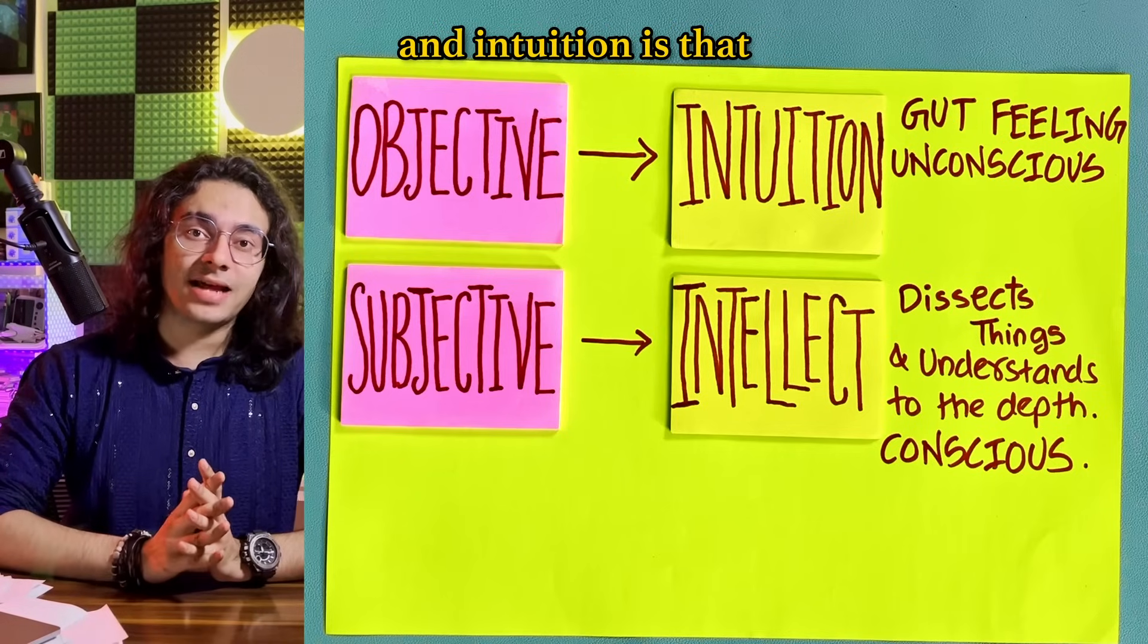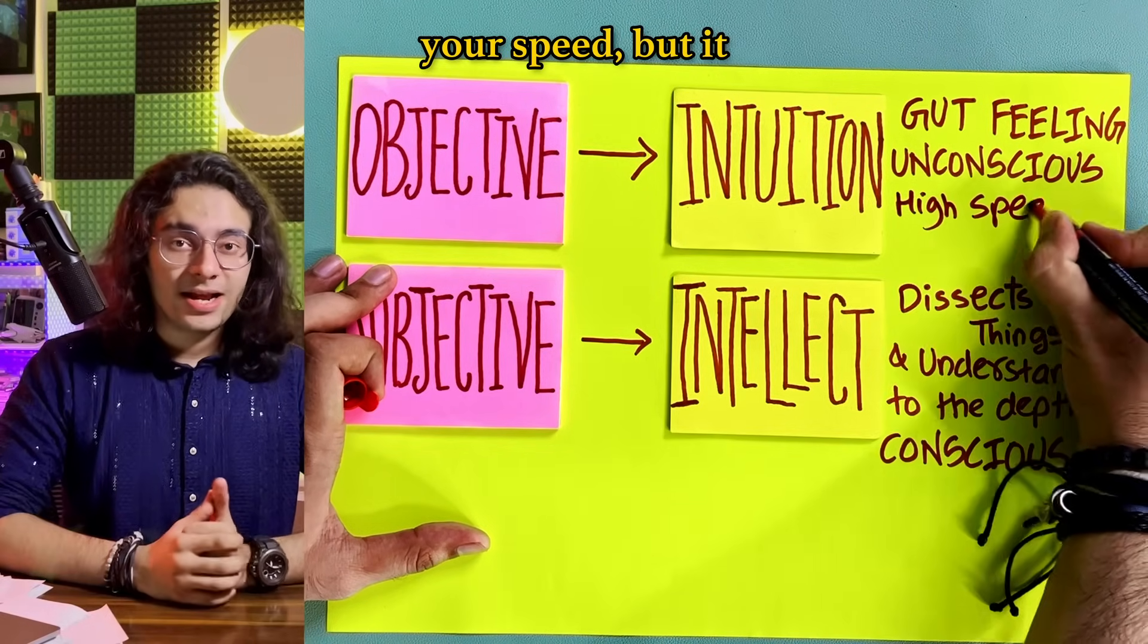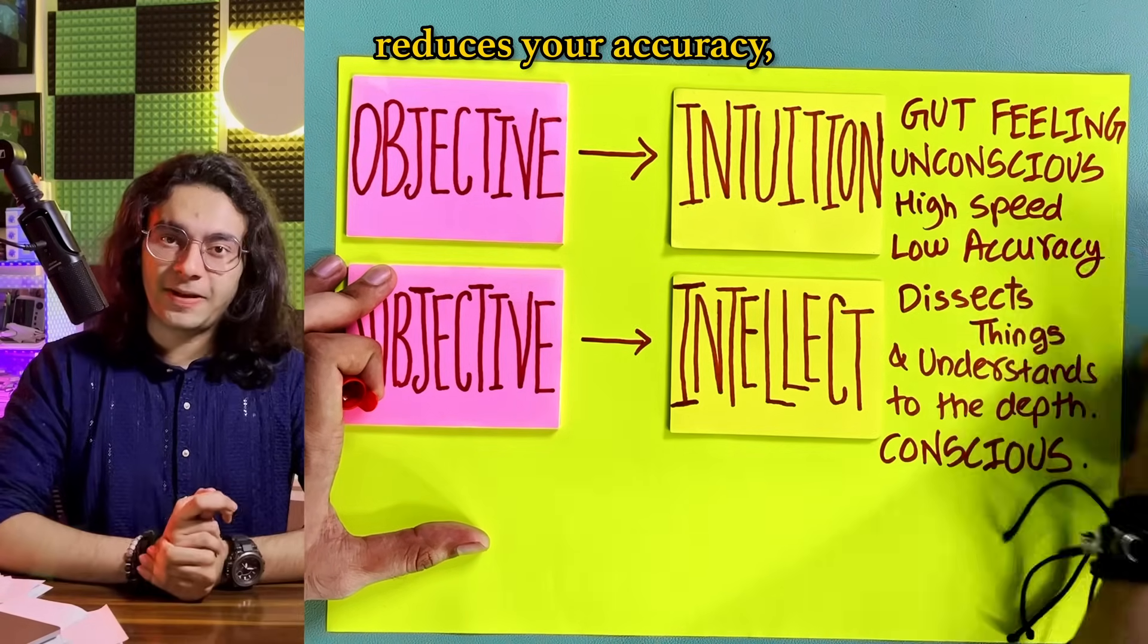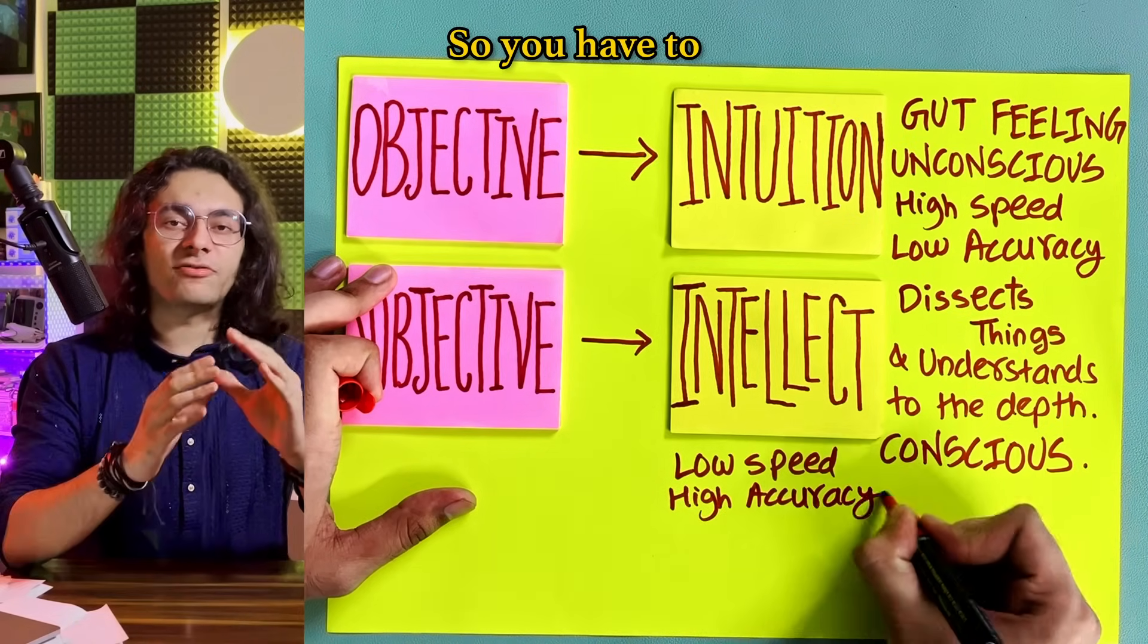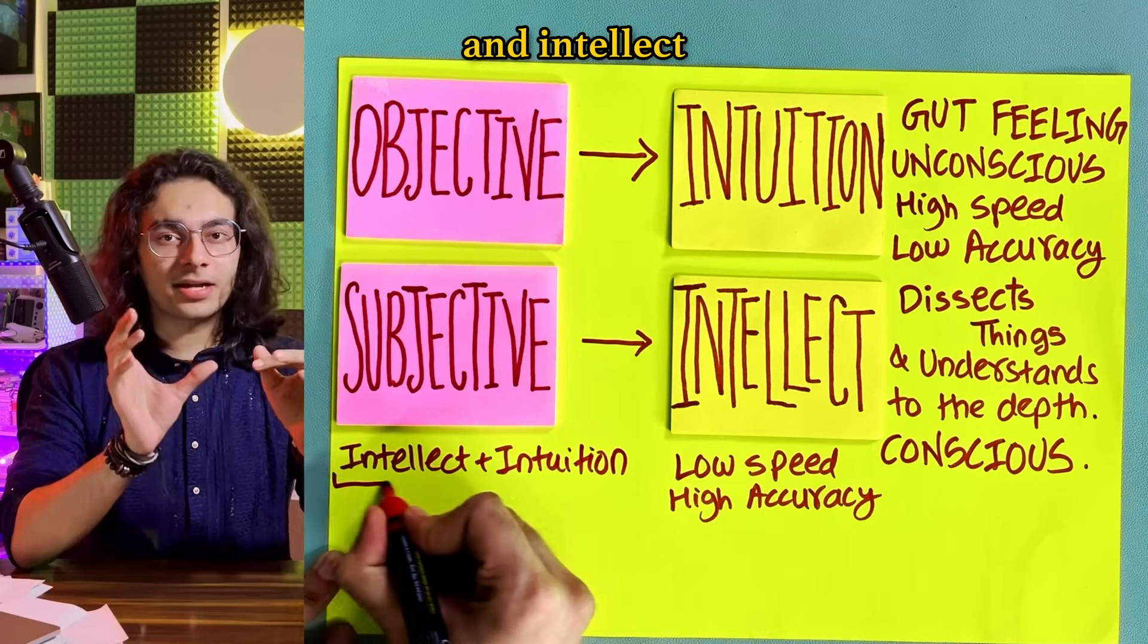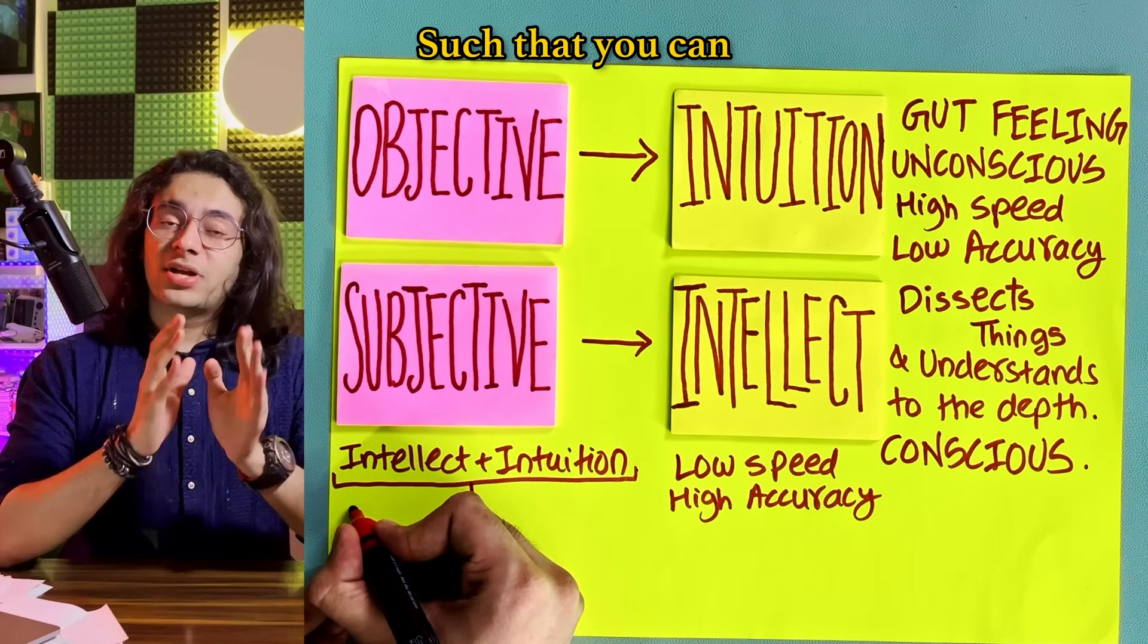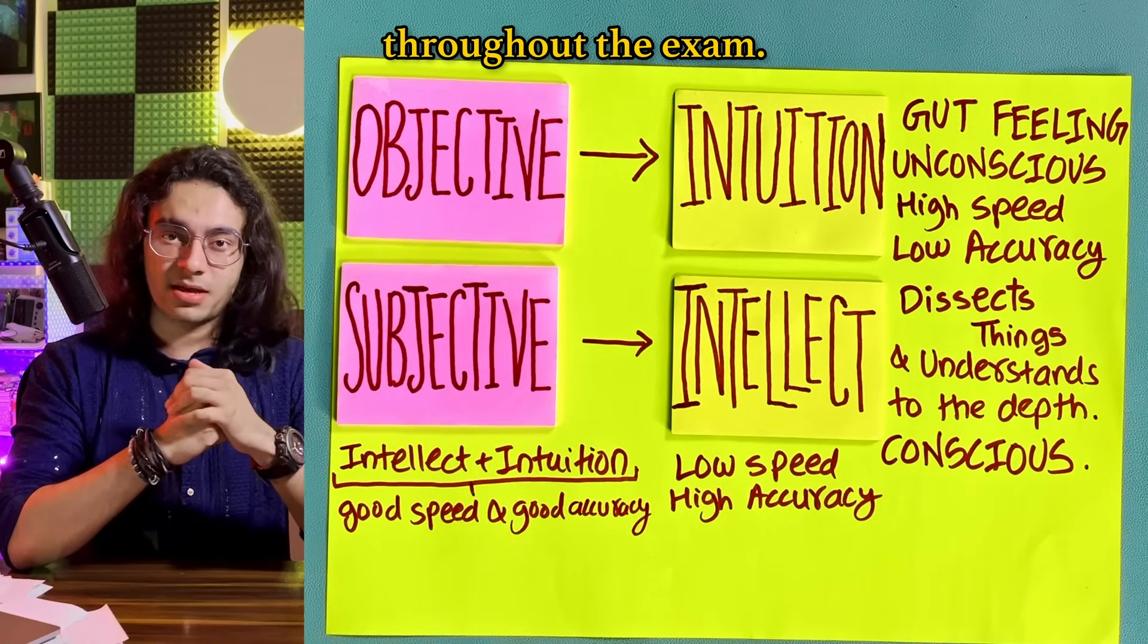The main difference between intellect and intuition is that intuition does increase your speed but it reduces your accuracy. While intellect is slow but it is very accurate. So you have to efficiently use the mixture of intuition and intellect during the exam such that you can solve the question with maximum accuracy while maintaining a good speed throughout the exam.